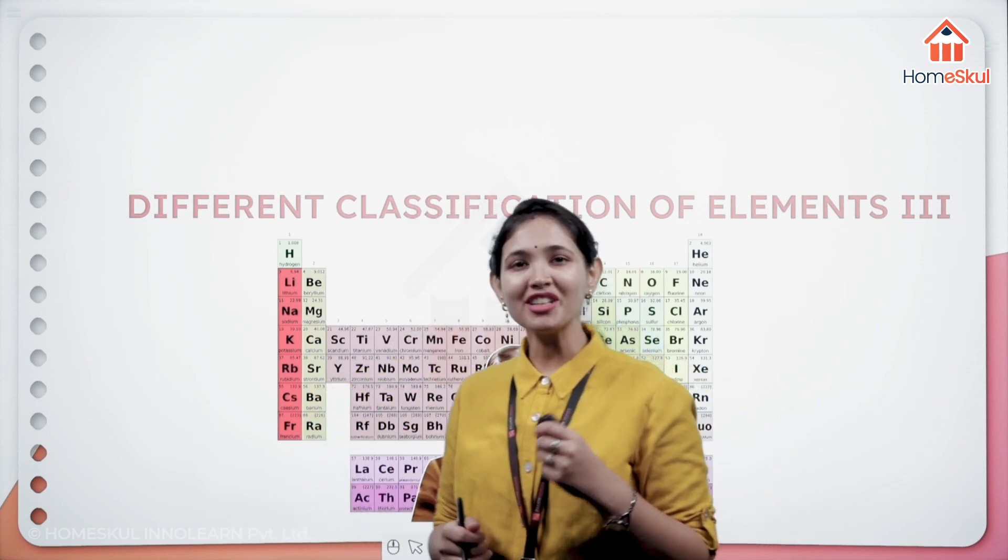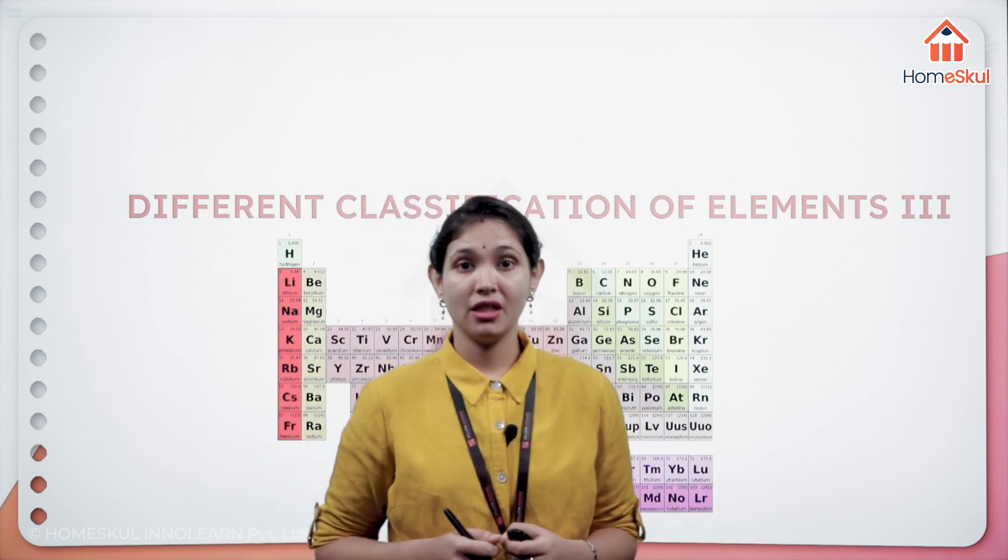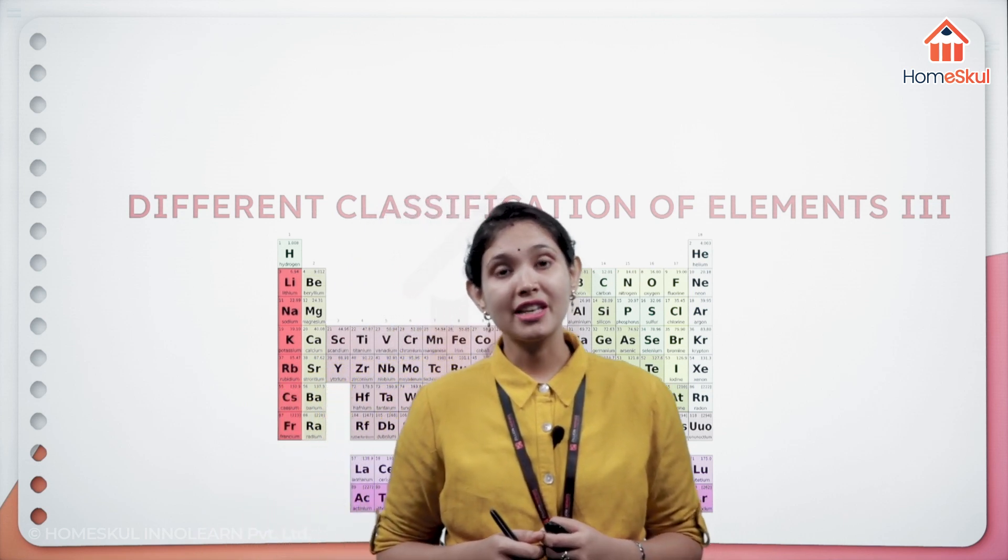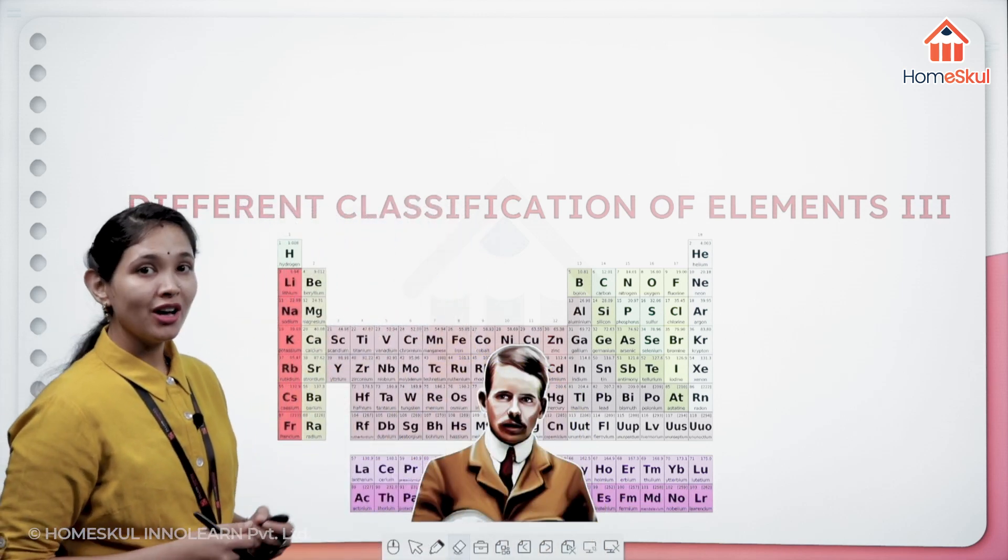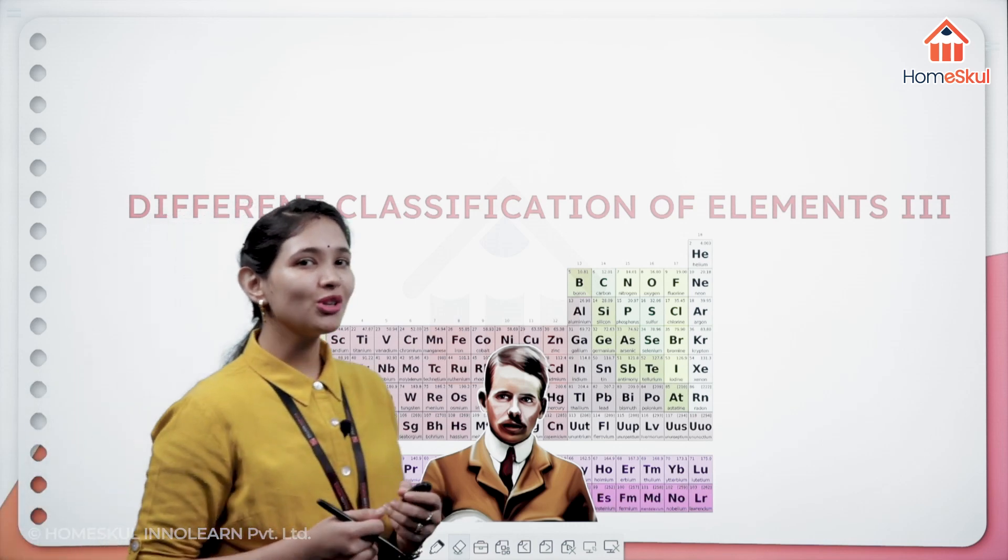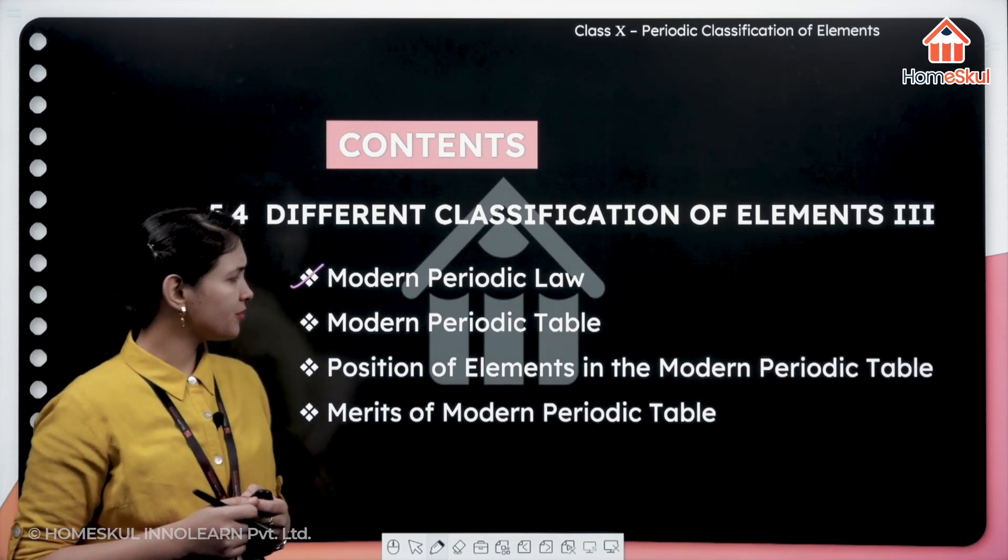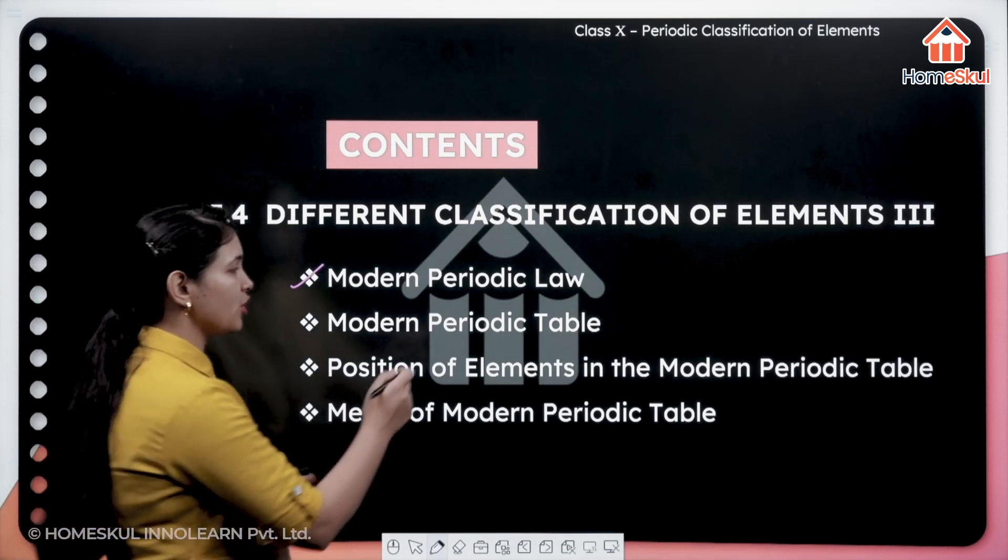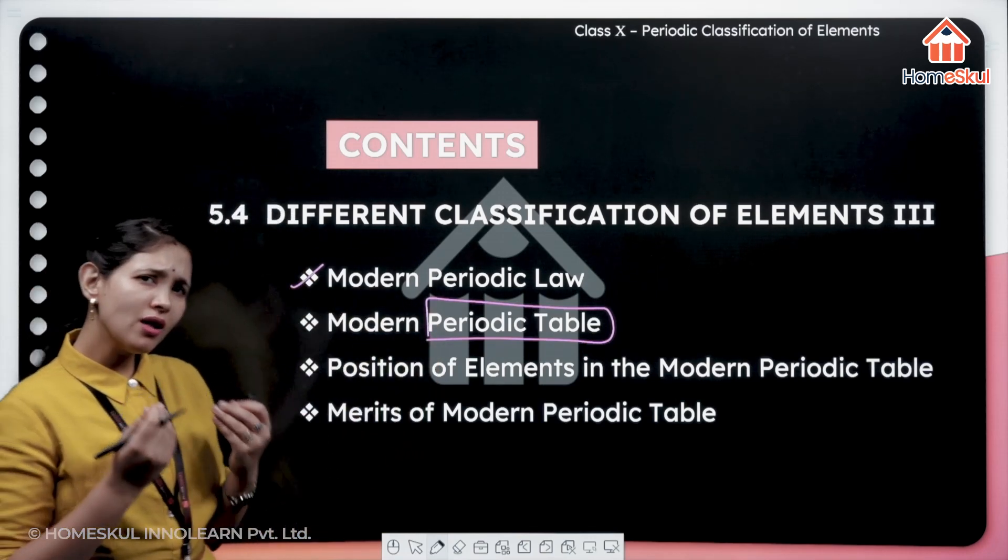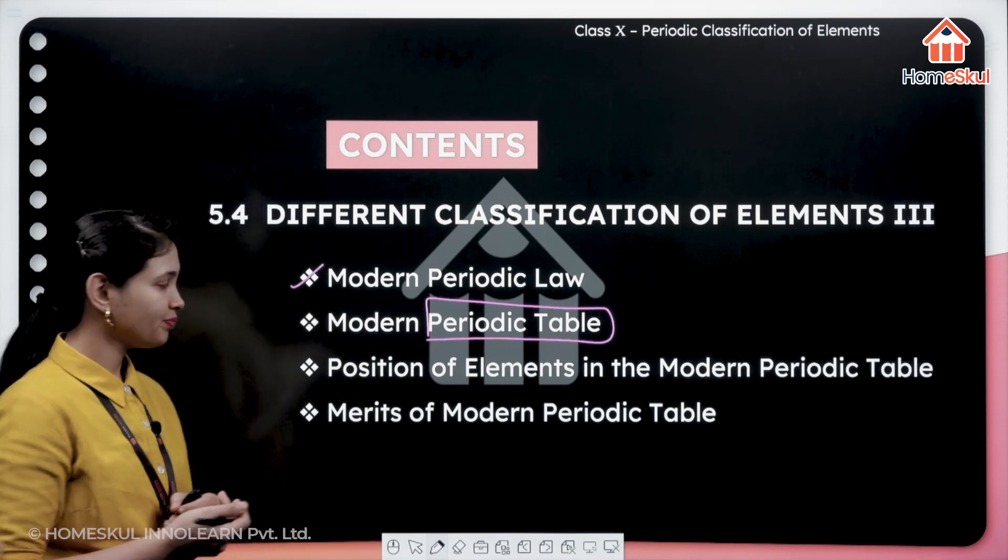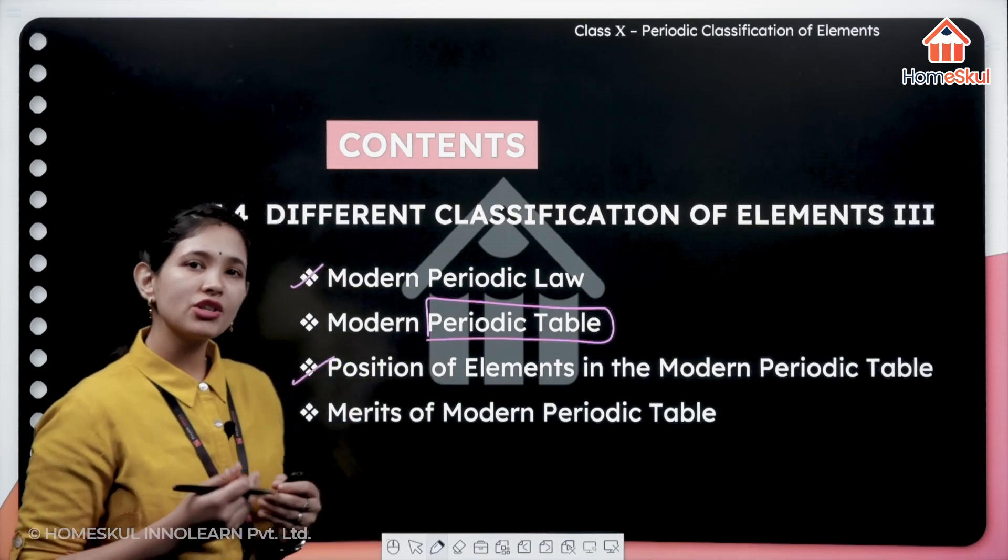Hello everyone. After the limitations of Mendeleev's periodic law, we are going to discuss the new law which was given by Moseley. Just see his picture. The things I am going to discuss here: first is the modern periodic law which he has given, and next is the periodic table which he has created, the position of all the elements in the modern periodic table, and the merits of the modern periodic table. We will discuss each and everything one by one.